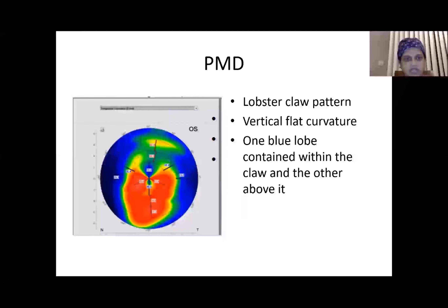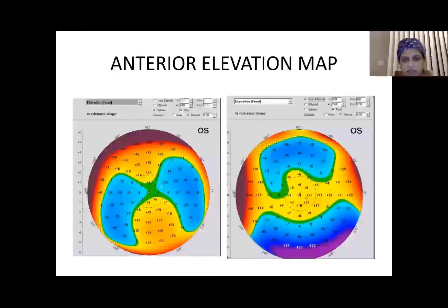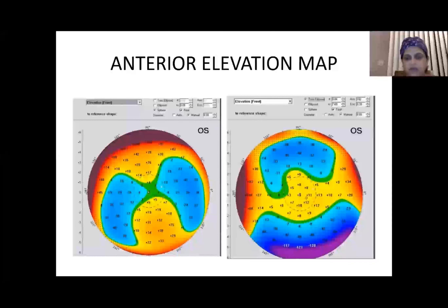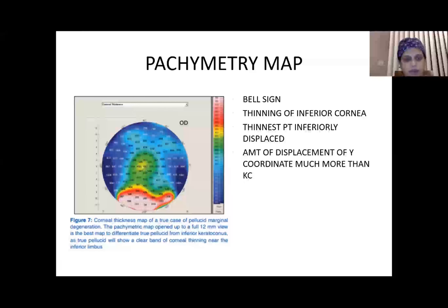This pattern is more exaggerated on the tangential curvature map. On the anterior elevation map a kissing-dove pattern is seen on a spherical float, but this disappears when a toric ellipsoid is used. The hallmark bell sign of PMD is seen on the pachymetry map. It is very important to open the pachymetry map to a full 12 mm view, as this is the only map that differentiates true pellucid from inferior keratoconus or pellucid-like keratoconus.